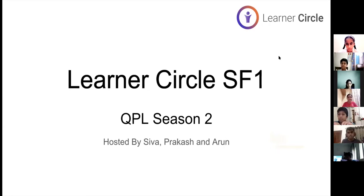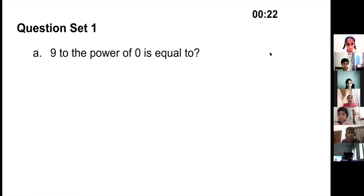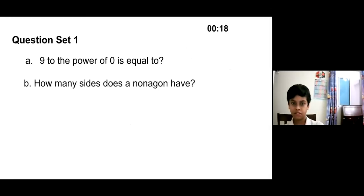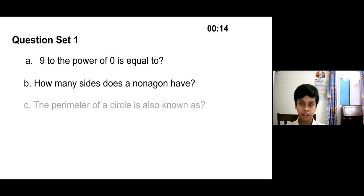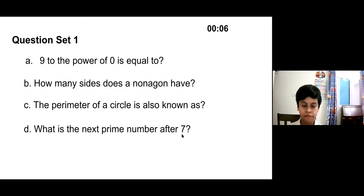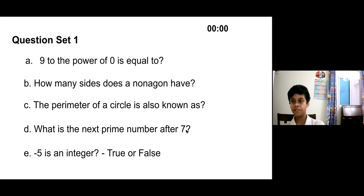So the timer is on. Your first question is here. 9 to the power of 0 is equal to? 0. How many sides does a nanogon have? 9. The perimeter of a circle is also known as? Circumference. What is the next prime number after 7? 11. Minus 5 is an integer? True. Okay, time is up. So, 9 to the power of 0 is actually equal to 1. So you do not get it right. How many sides does a nanogon have? 9. You said it right. Perimeter of a circle is circumference. You got it right. What is the next prime number after 7? 11. You told it right. Minus 5 is an integer. True. So you got 4 right. So 4 times 5 is 20. You get 20 marks for this question.